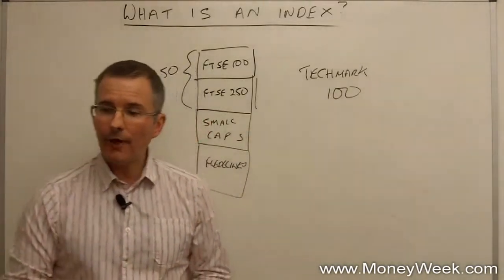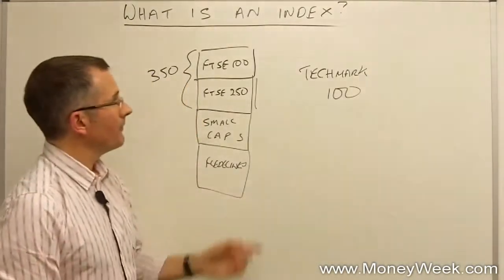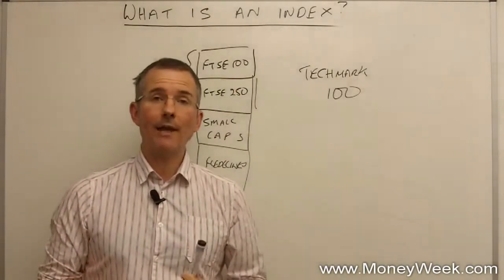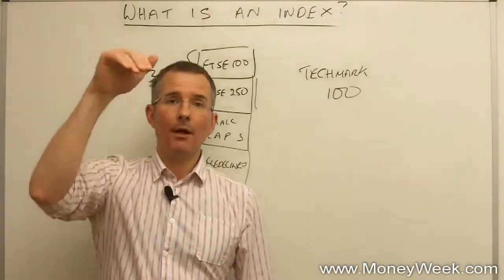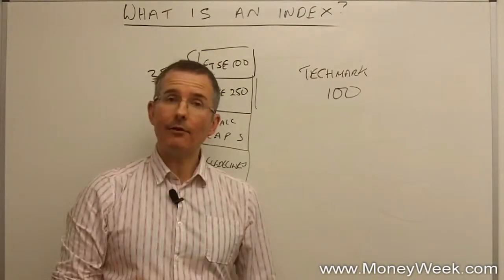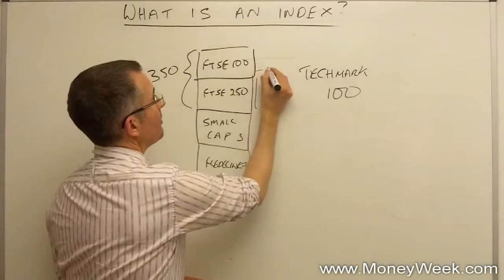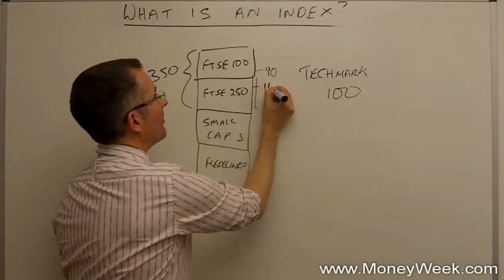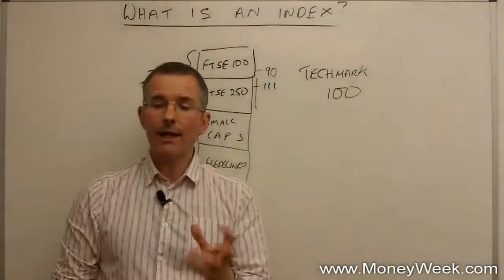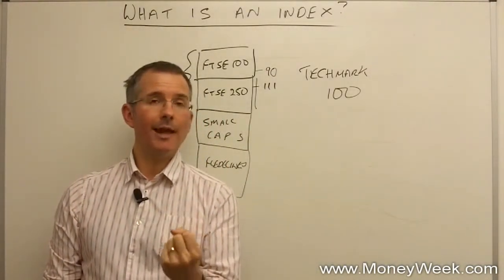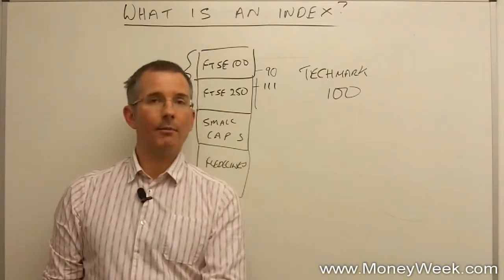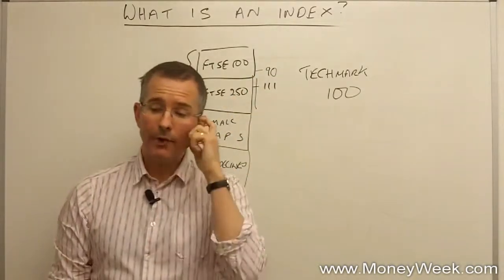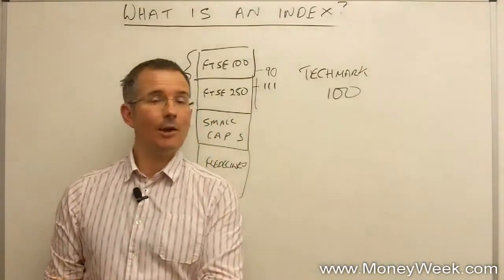Anything else to know about indices? One thing to watch out for is the components change. In the UK there is a quarterly review and membership of each index is changed at that review. Companies literally come up and join the club and others drop out to keep the membership relatively consistent. Normally to join the club you need a market capitalization that puts you around position 90 or better, and to fall out you normally have to drop to around 111.